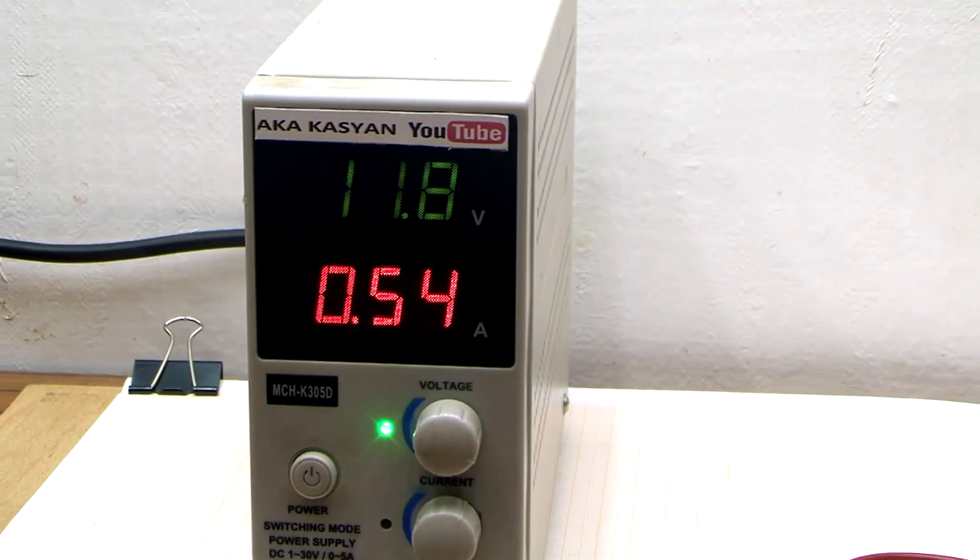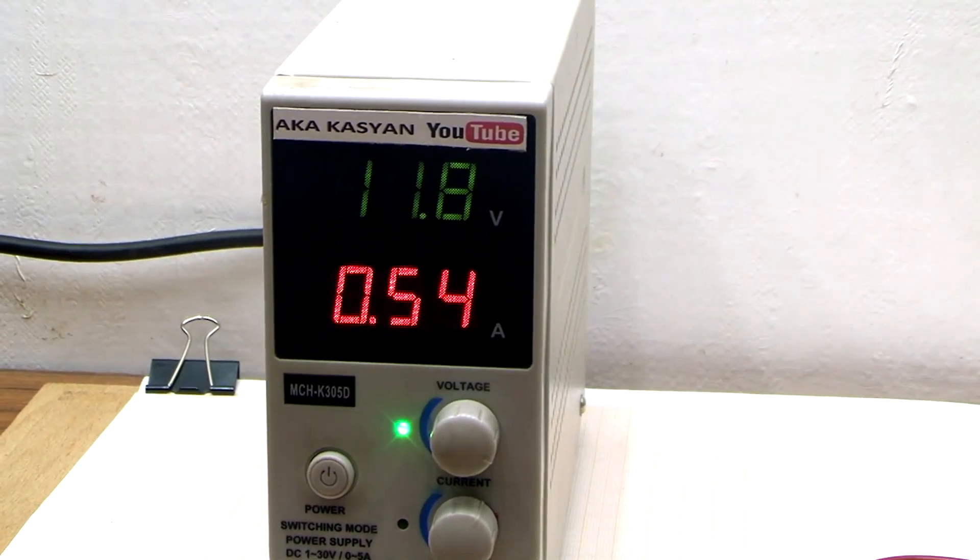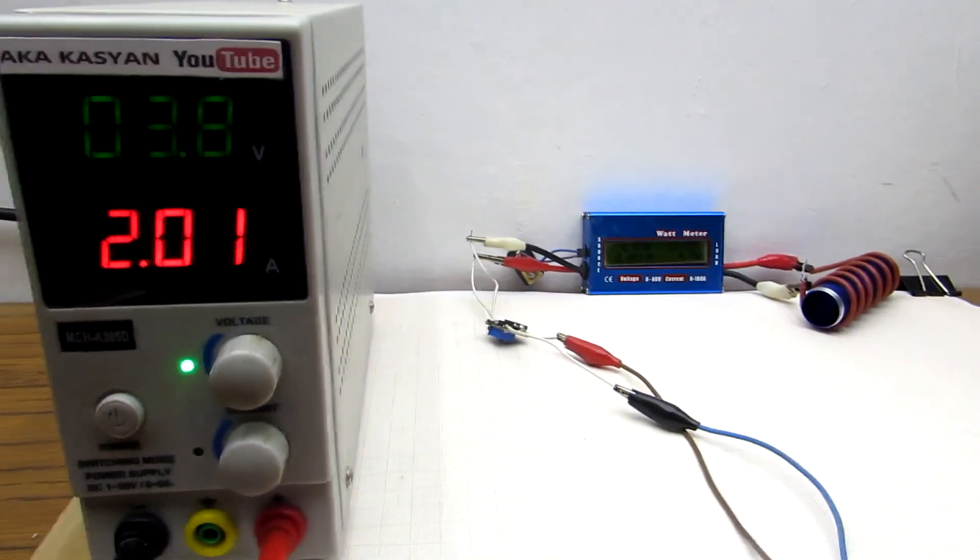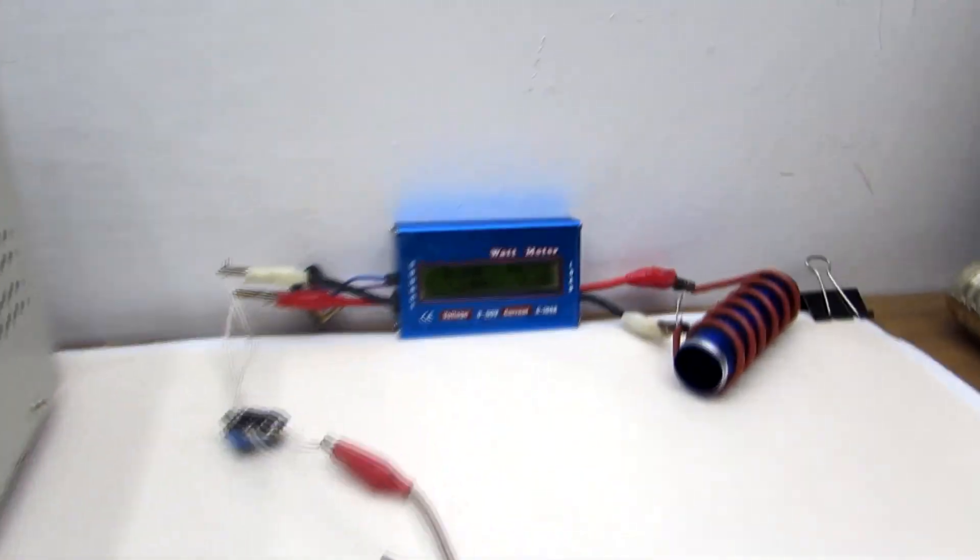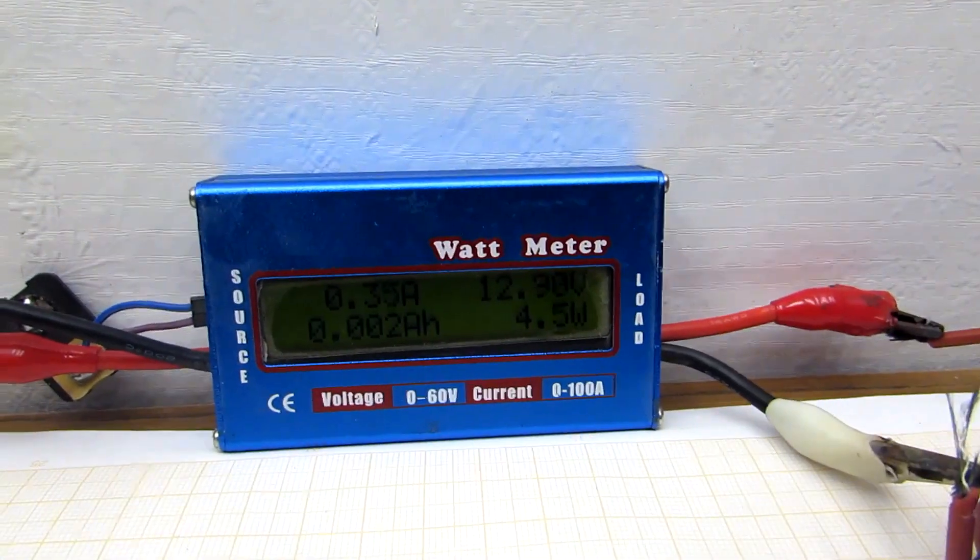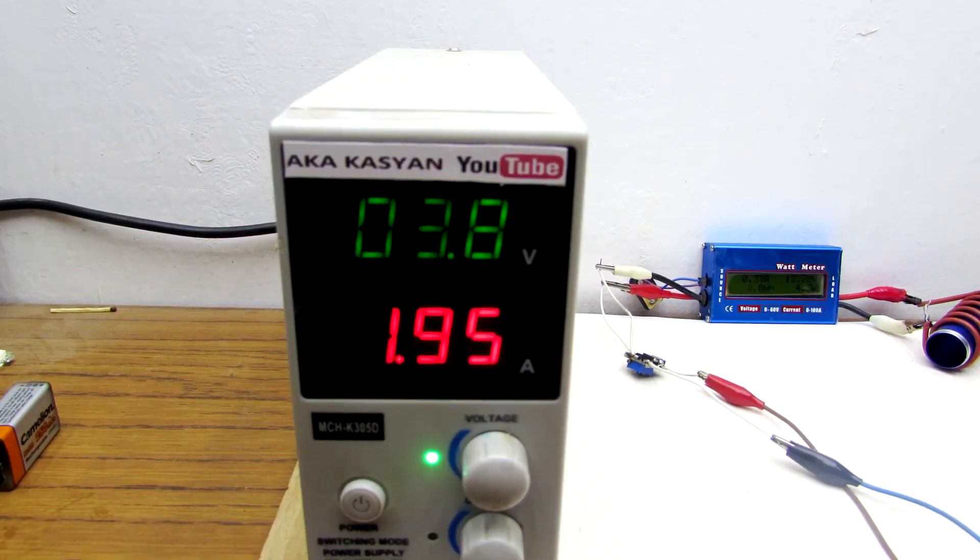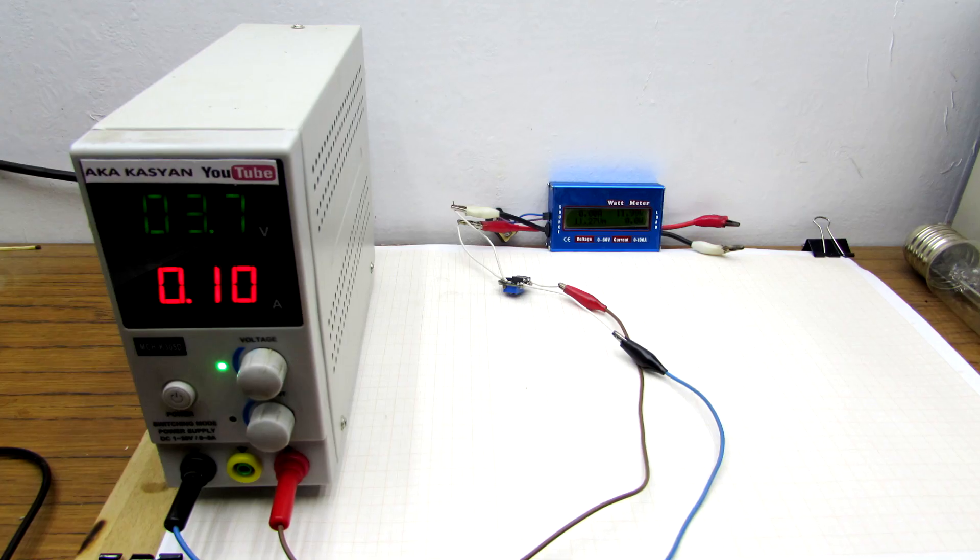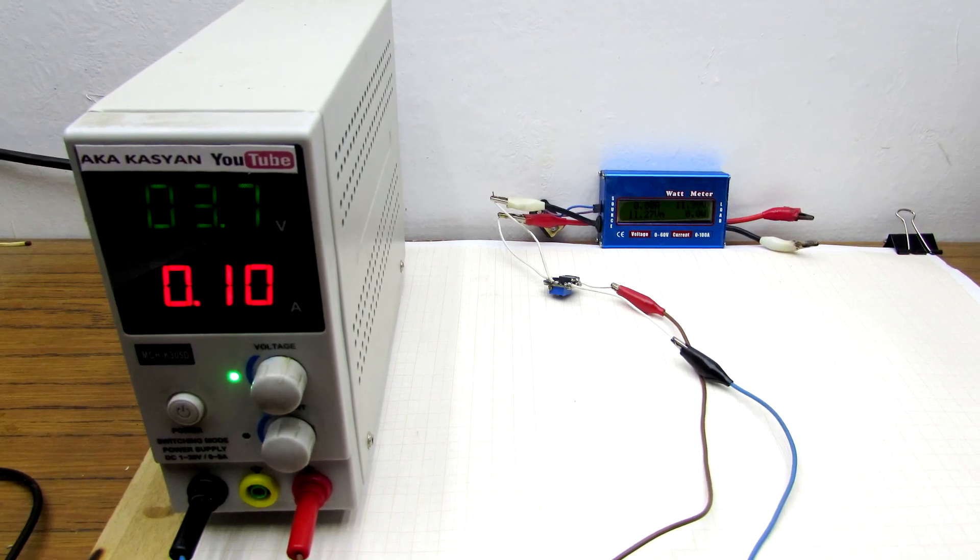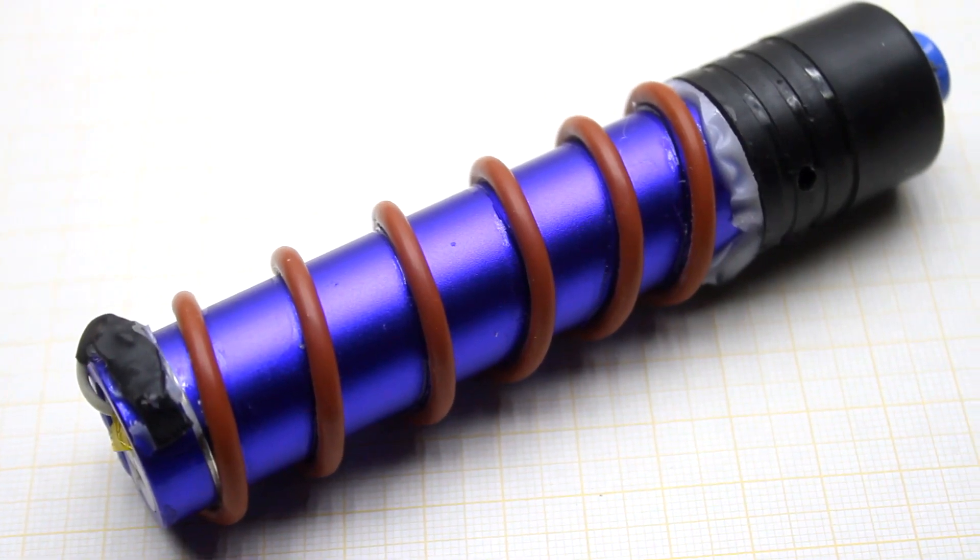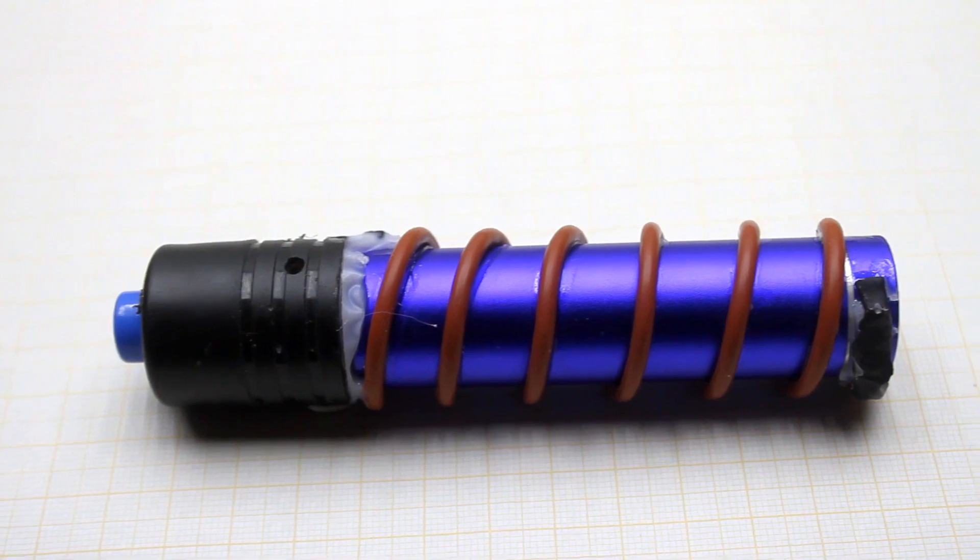Now let's make measurements of power and operating time. I apply 3.7V to the converter input, simulating the battery, and to the output connect the heater and wattmeter. The consumption is slightly less than 2A, of which about 100mA is consumed by the wattmeter itself. So at the input we had slightly more than 7W, and at the output we have about 5W. So the efficiency is about 70%.